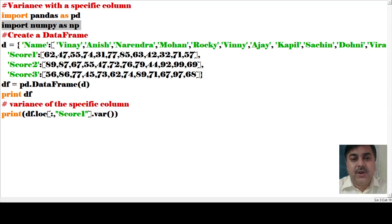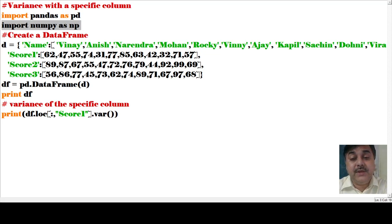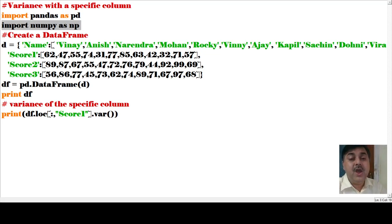We have called the variance function to work with score1. We specify the column using print(df.loc), where loc is the local variable. Based on that local variable, we construct the variance — the variance of the scores. Taking the value of score1, each and every value is implemented here to find the different patterns.